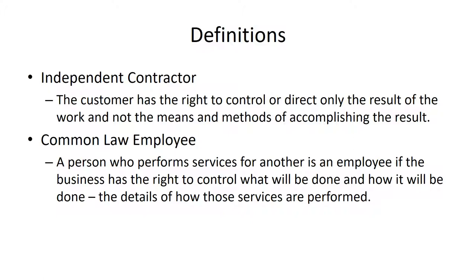For example, if you own a home and hire someone to build a fence, that is probably an independent contractor — you're not regulating how they do the work, who they bring to help, or what hours they're there. On the other hand, hiring somebody to work in a chiropractic office using specific forms, being present at specific hours, and handling patients in a specific way is almost certainly an employment relationship rather than an independent contractor.